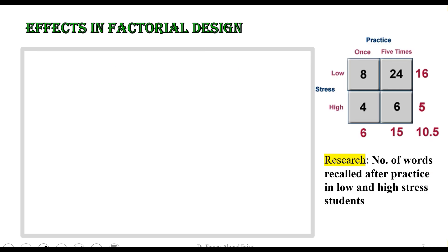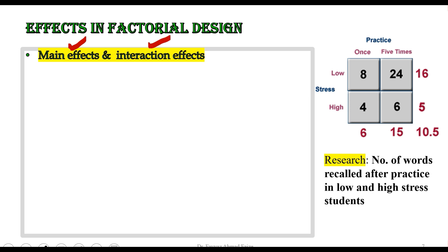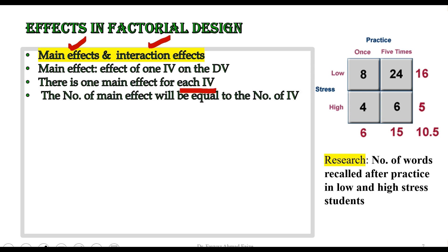Let us understand the effects in factorial design. There are two types of effects in factorial design: one is called the main effect and the second is called the interaction effect. The main effect is linked with the independent variable — it describes how one independent variable influences the dependent variable. The number of main effects equals the number of independent variables or factors.